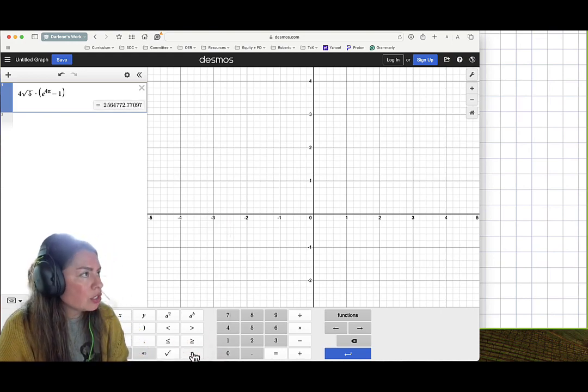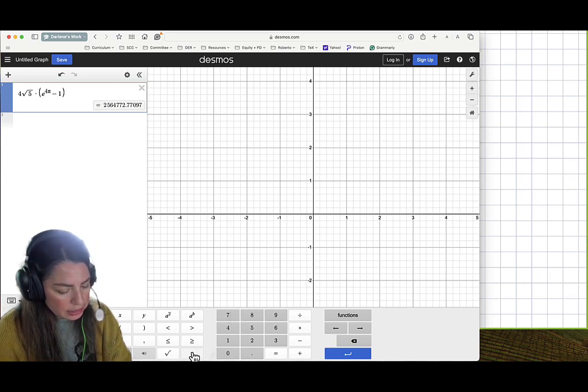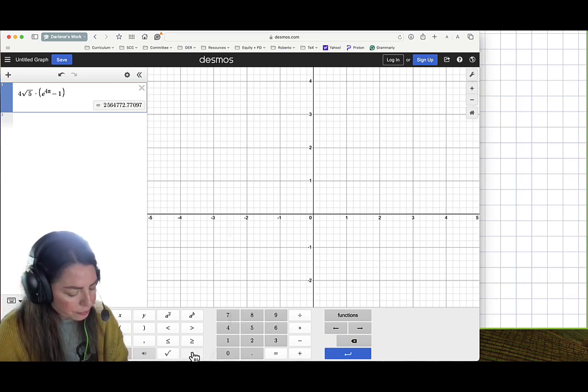So then I'll write this down. I get 2, 5, 6, 4, 7, 7, 2, 0.77.